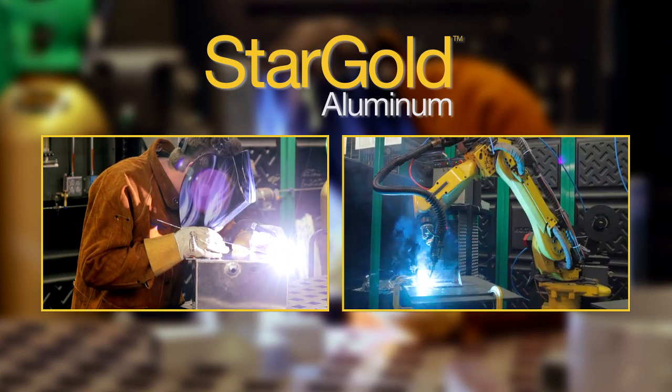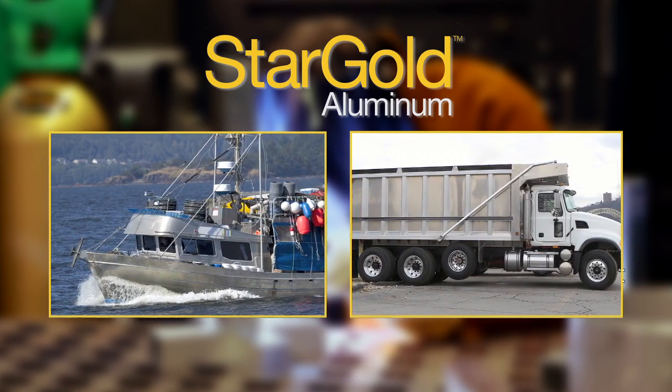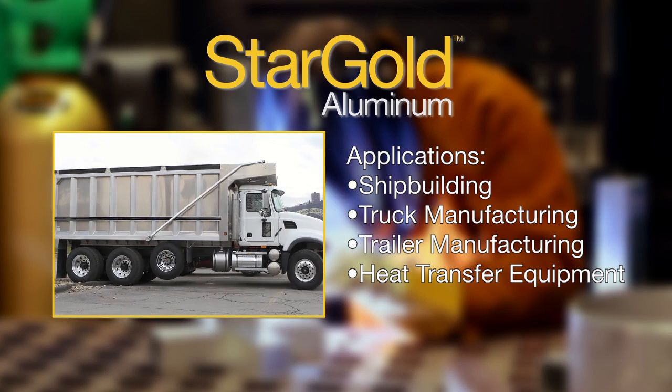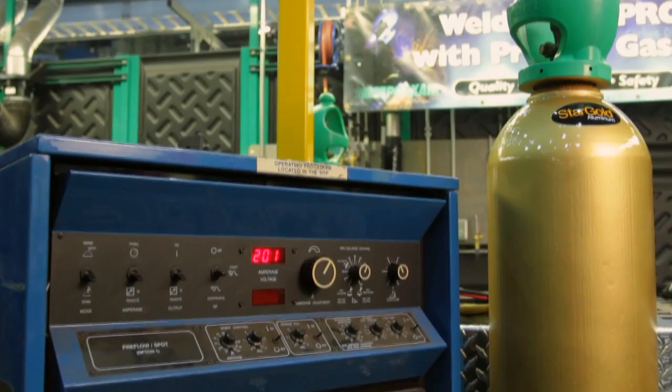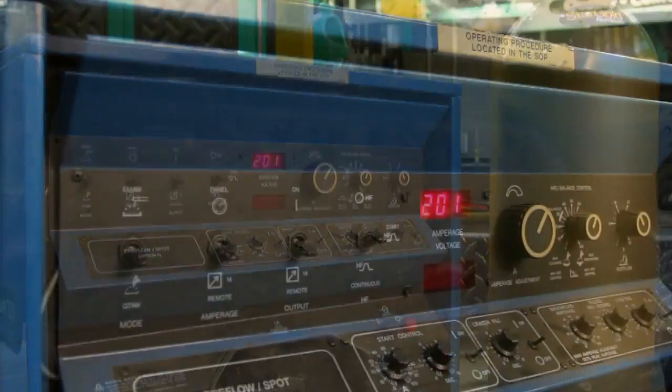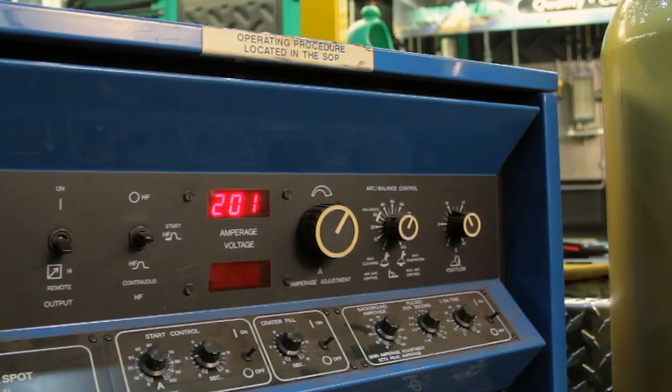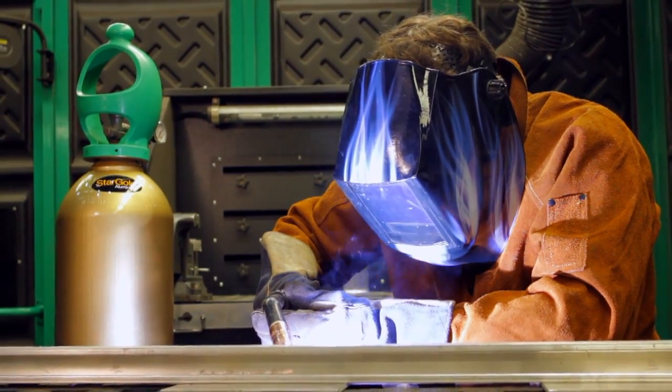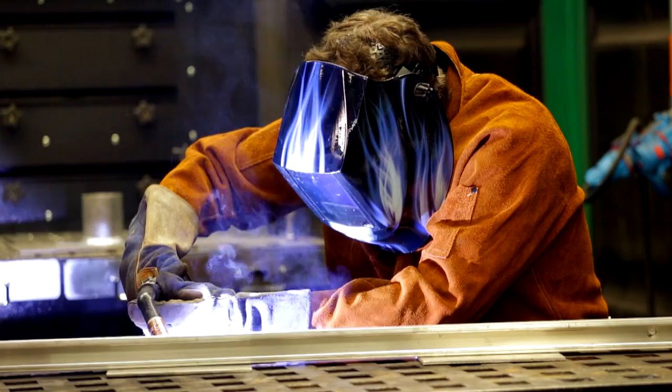Applications for Stargold Aluminum include shipbuilding, truck and trailer manufacturing, and heat transfer equipment using 4,000 and 5,000 alloy series wires. Fabricators using older technology welding machines may see a benefit when switching from argon to Stargold Aluminum as the increased arc stability results in an arc characteristic similar to that of a modern inverter machine.